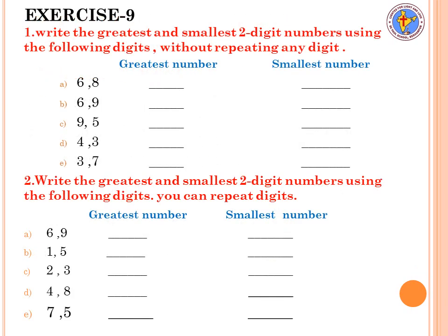This is the last exercise for the two digit numbers chapter — chapter two. Exercise: write the greatest and smallest two digit numbers using the following digits, without repeating any digit. For example, digits 6 and 8 are given — the greatest number is 86 and the smallest number is 68. Continue the same way for all questions.